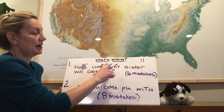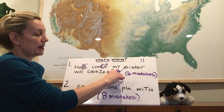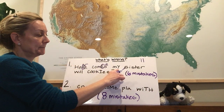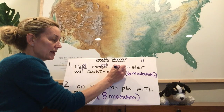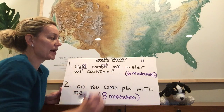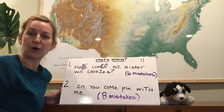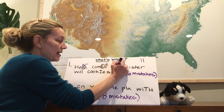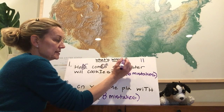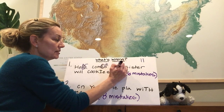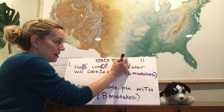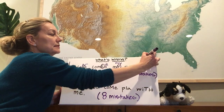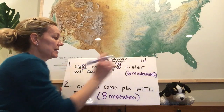Here comes my — if there were a line right here, that Y tail should go below it. So I'm going to call that another mistake. That should look like this — a Y. There's three.